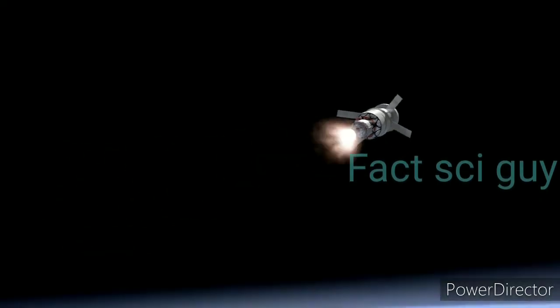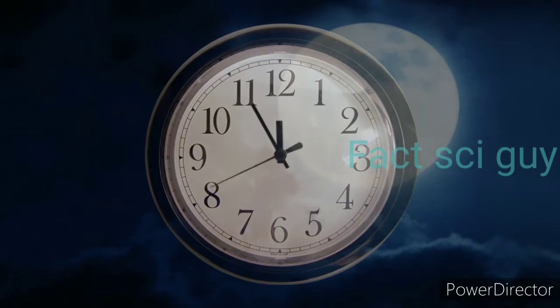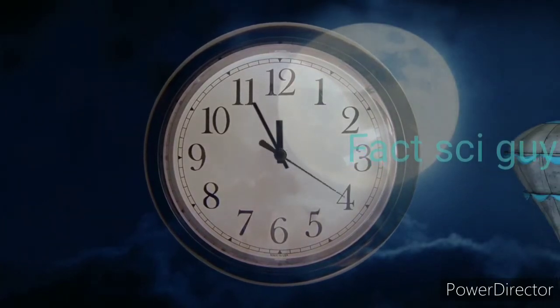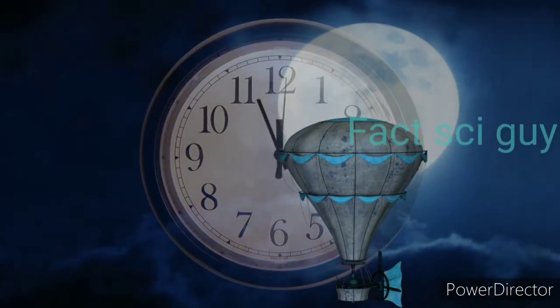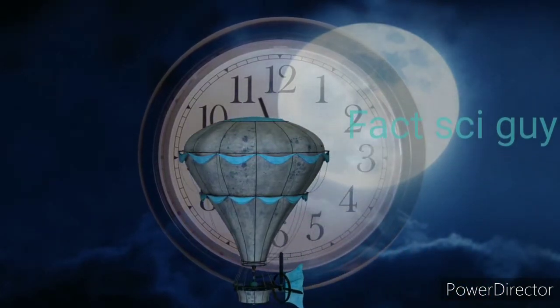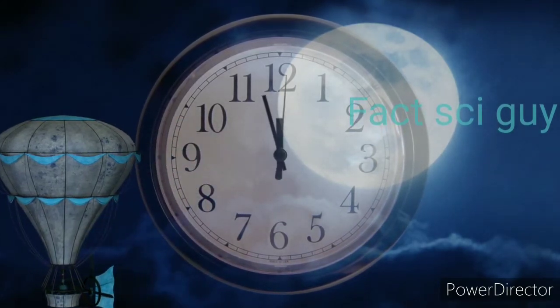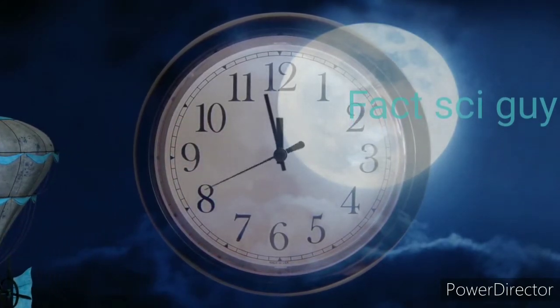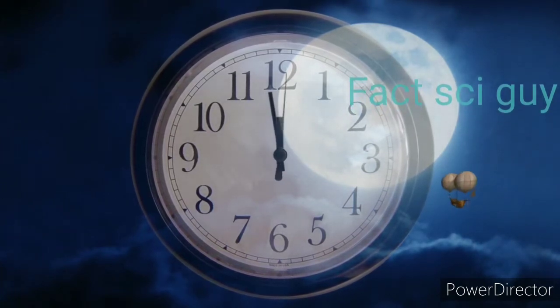As we all know, the planets around the Sun revolve in an elliptical orbit. Once they go near the Sun and then they go away from the Sun. In the same way, their satellites - the moon revolves around the Earth in an elliptical orbit. So there are two positions.